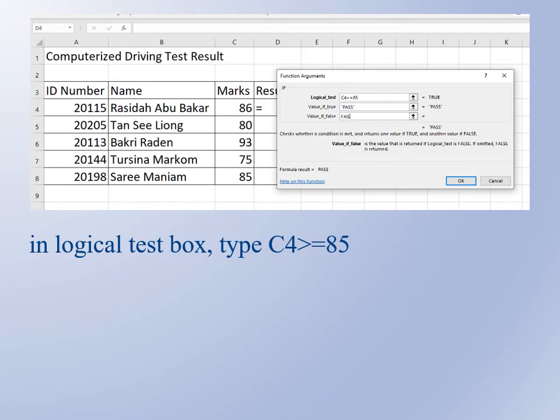Once the dialog appears, in the logical test box, type C4 greater than or equal to 85. In the value if true box, type pass without the inverted comma, just P-A-S-S.